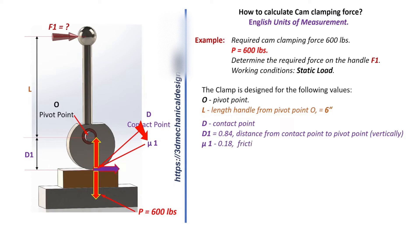Mu1 = 0.18, frictional coefficient of the contact point. Diameter of pivot point pin = 0.5 inch. Mu2 = 0.05, frictional coefficient of pivot point.